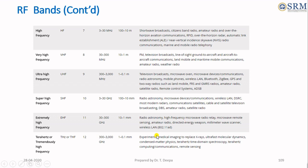The high frequency band ranges from 3 megahertz to 300 gigahertz, wavelength from 100 meters to 1 millimeter, with various applications. The 12th band is called terahertz, with a wavelength from 1.1 millimeters to 0.1 millimeters and frequency up to 3000 gigahertz. Terahertz waves are mainly used in optical communications and remote sensing.